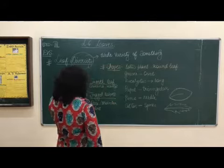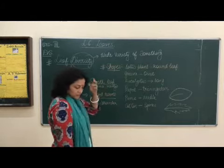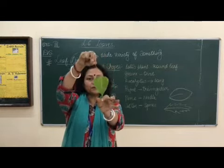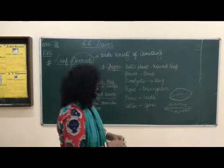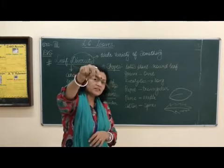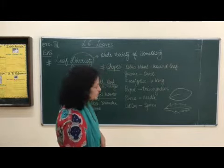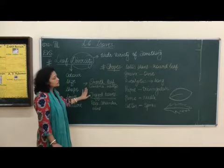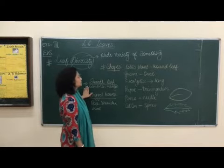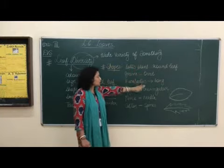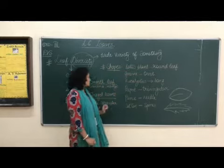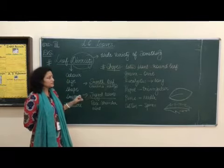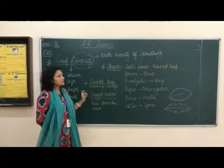When we are talking about shapes of leaves, I have a peepal tree leaf — see, it is triangular in shape. I also have a needle-shaped leaf. So we have covered the shapes of the leaves: round shape, oval shape, long, triangular, needle, or spine shape. In that, we also have two types — smooth leaves and jagged leaves. Jagged leaves are uneven at the edges, and smooth leaves have totally even edges. Here we complete the topic of shapes.